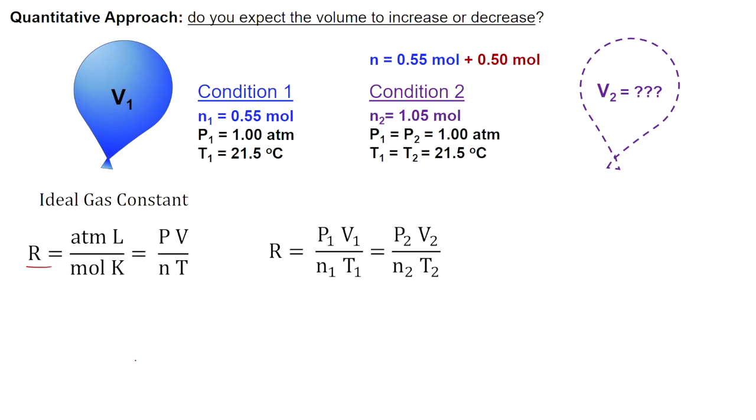Now, let's cancel out our constant variables, pressure and temperature. This is going to simplify the equation for us to V1 over N1 equals V2 over N2.